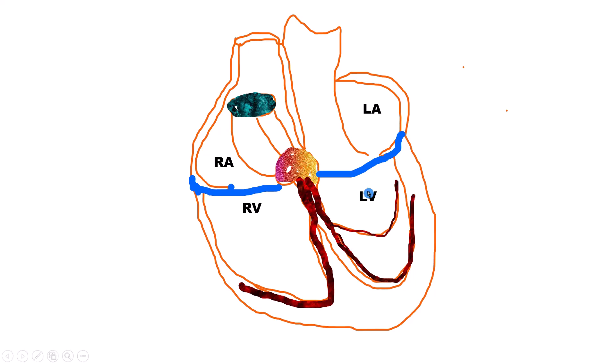Normally the atria and ventricles are electrically isolated from each other by connective tissue, and the only means of electrical communication between the atria and ventricles is through the specialized conduction system of the heart. This conduction system includes the atrioventricular node, the bundle of His, and the bundle branch system.